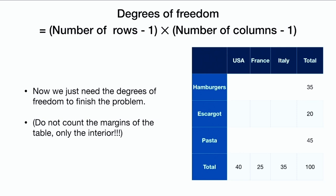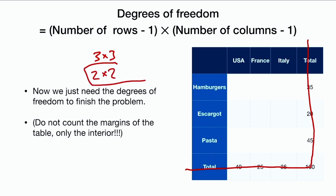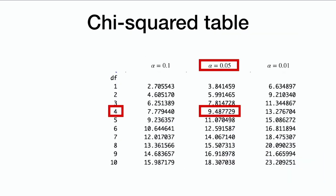We have to define the degrees of freedom. For this two-dimensional table, degrees of freedom equals the number of rows minus one times the number of columns minus one. This is a three-by-three table with three levels of each variable, so (3 minus 1) times (3 minus 1) equals 2 times 2 equals 4 degrees of freedom. We look in our chi-squared table with 4 degrees of freedom and alpha equal to 0.05, and we get a critical value of 9.48.